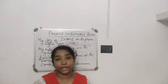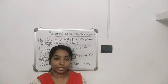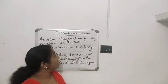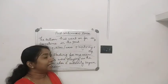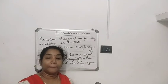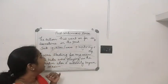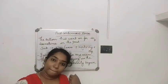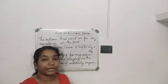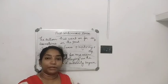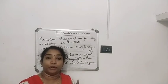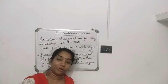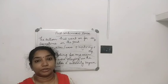Like this, we also have past continuous tense. Let's study past continuous tense. Past continuous tense means the action that went on for some time in the past. It lasts for some time in the past. In all continuous tenses we have to use the ING form of the word — in present continuous we use ING, and in past continuous also we use ING.